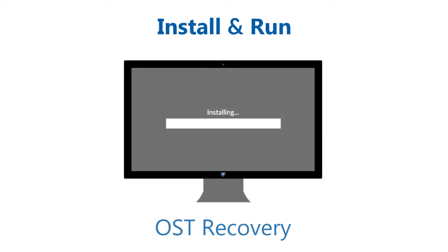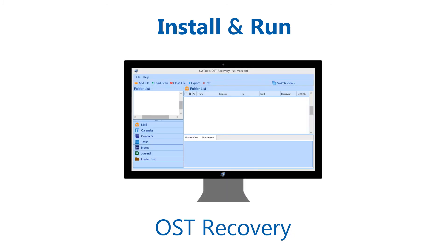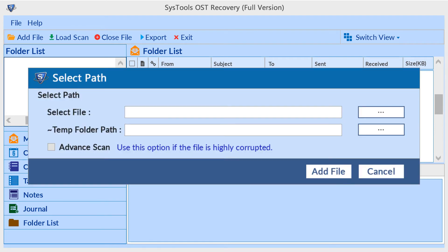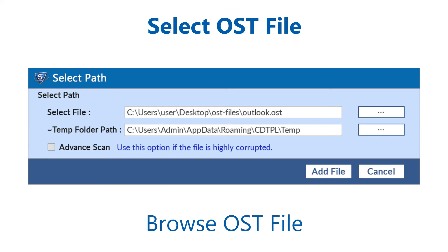First, you need to install and run SysTools OST Recovery Tool on your system. Click the 'Add File' option to open the browsing window for selecting your OST file and temp folder. Browse your OST file and change the temp folder path if needed. If your OST file is corrupted, select the advanced scan mode, then click the 'Add File' button to continue.